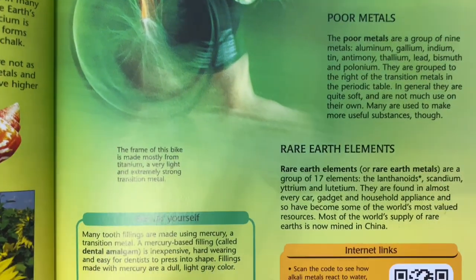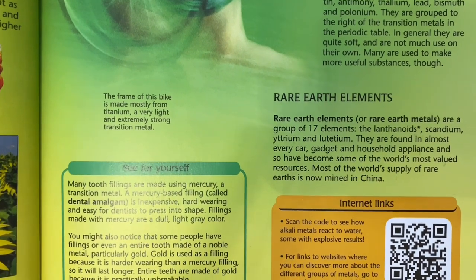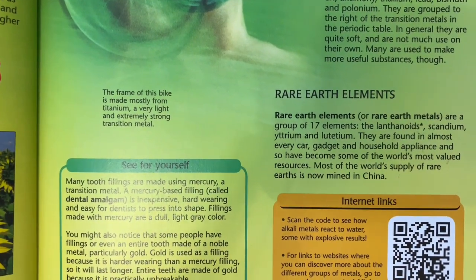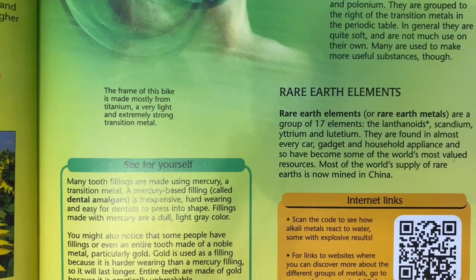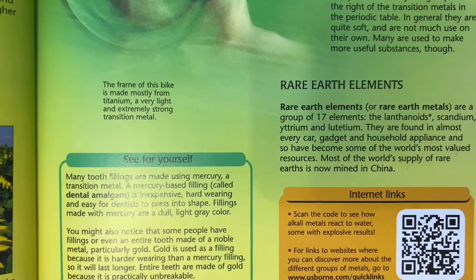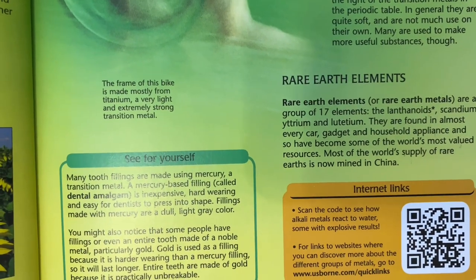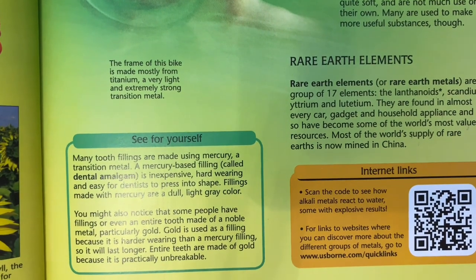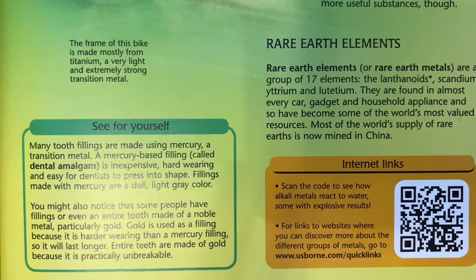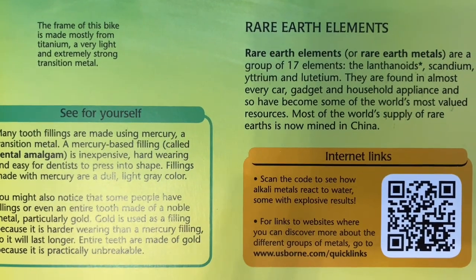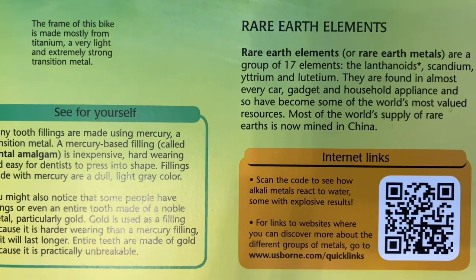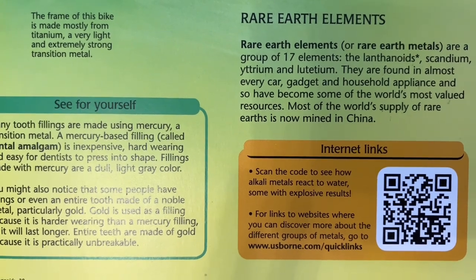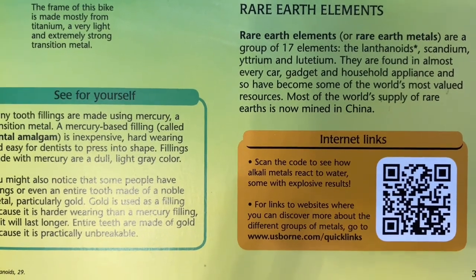Lastly, we have rare earth elements. These are a group of 17 elements — the lanthanoids, scandium, yttrium, and lutetium. They are found in almost every car, gadget, and household appliance, and so have become some of the world's most valued resources. Most of the world's supply of rare earths is now mined in China.